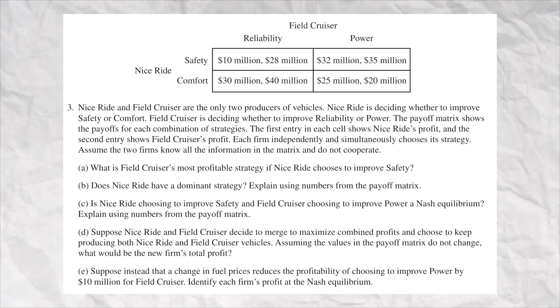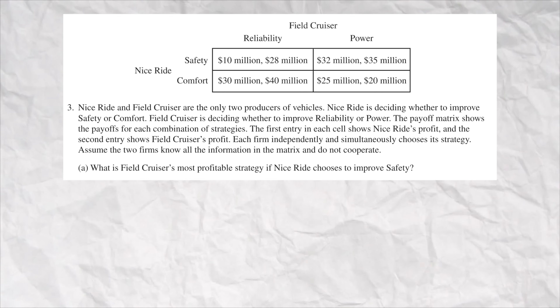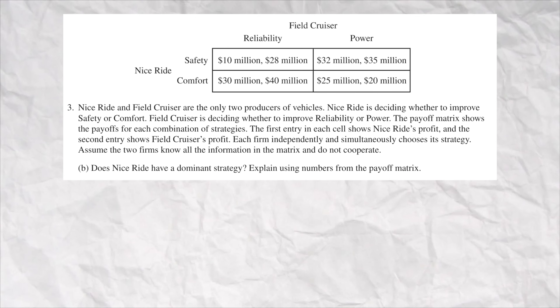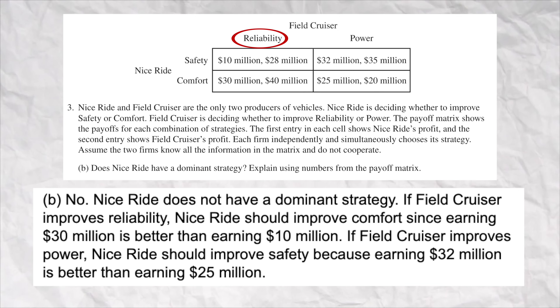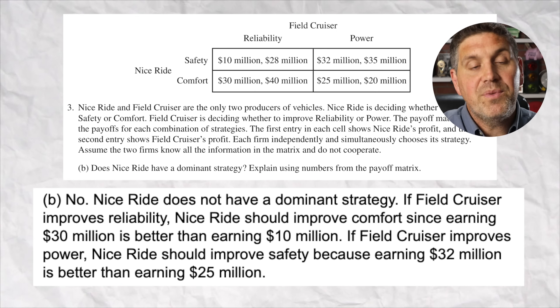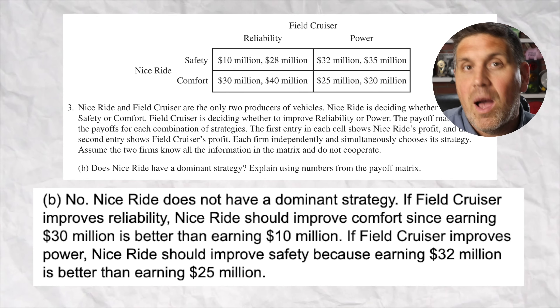For question number three, they had game theory with the payoff matrix. You had two different car companies. Part A was just asking you to see if you understand how to read the matrix — if Nice Ride chooses to improve safety, what's best for Field Cruiser? The answer is to improve power. In part B, they ask if Nice Ride has a dominant strategy, and the answer is no. But you had to explain using numbers from the matrix. If Field Cruiser wants to improve reliability, Nice Ride is going to choose comfort because $300 million is better than $10 million. But if Field Cruiser decided to improve power, Nice Ride would rather have $32 million and choose safety instead of comfort. So Nice Ride sometimes chooses comfort and sometimes chooses safety, and therefore does not have a dominant strategy.